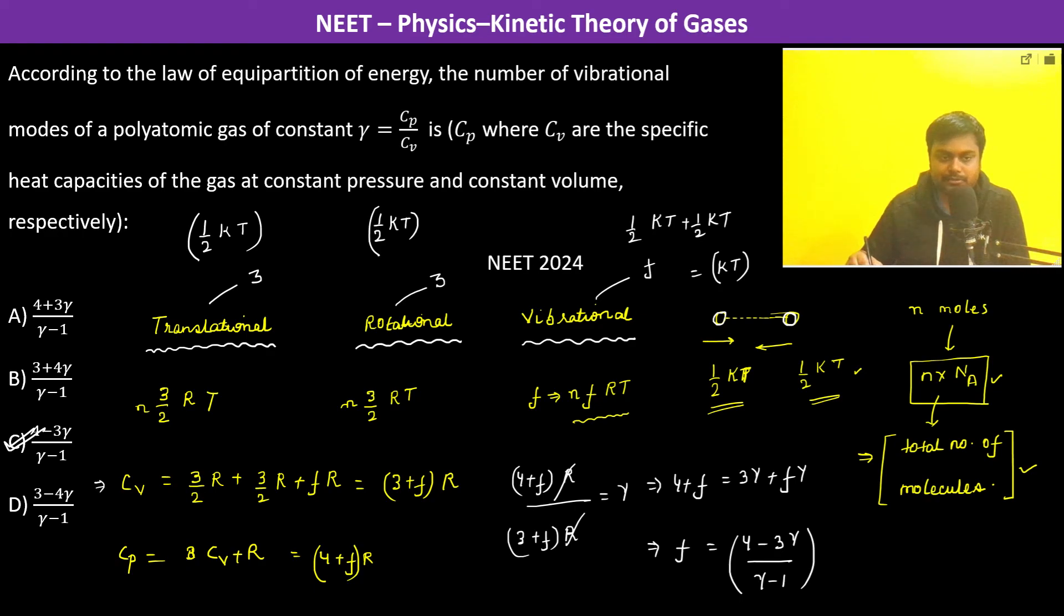Now we have C V. C V is equal to 3 plus F R, and C P is 4 plus F into R. Therefore C P by C V is equal to gamma, and therefore the degree of freedom is going to be this. Thank you.